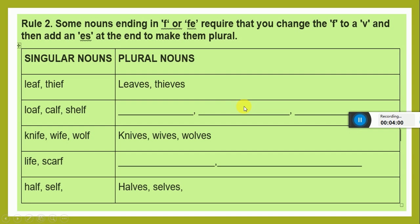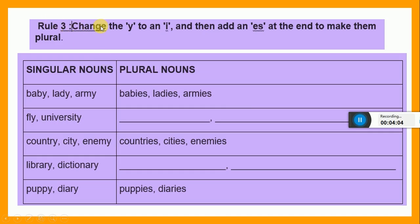Let's move towards the next rule. Rule number 3. Change the y to an i. We will change the y into i and then add es at the end to make them plural. If there is a y at the end, then you will change the y into i and then add es. For example, baby, babies. There is no y — there is i. We have written i instead of y and then added es. Lady, ladies. Army, armies.